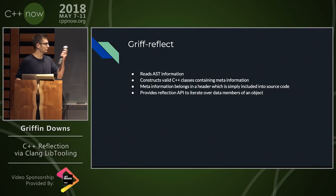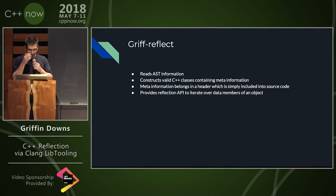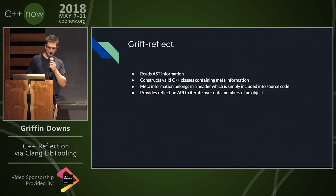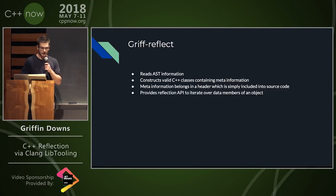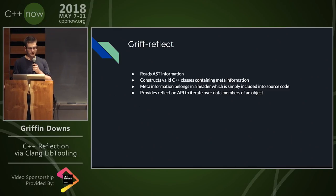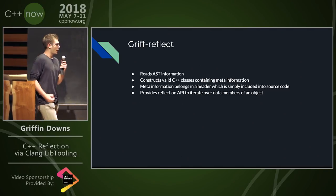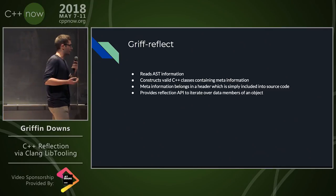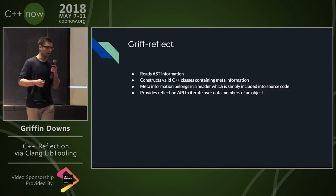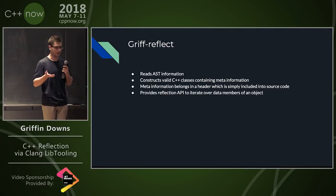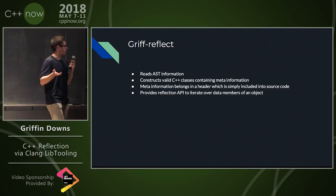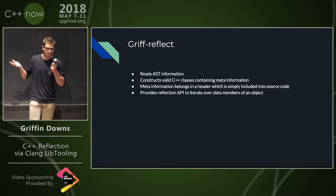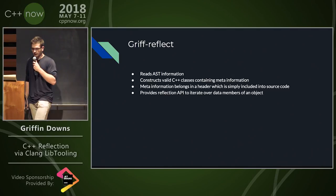Here comes Grip Reflect. I have written a tool that reads the AST information and can construct valid C++ classes containing meta information. This meta information belongs in a header. What you can do is include it into your source code, and it will allow you to mitigate any boilerplate code writing for reflection. I provide an API that allows you to do so.